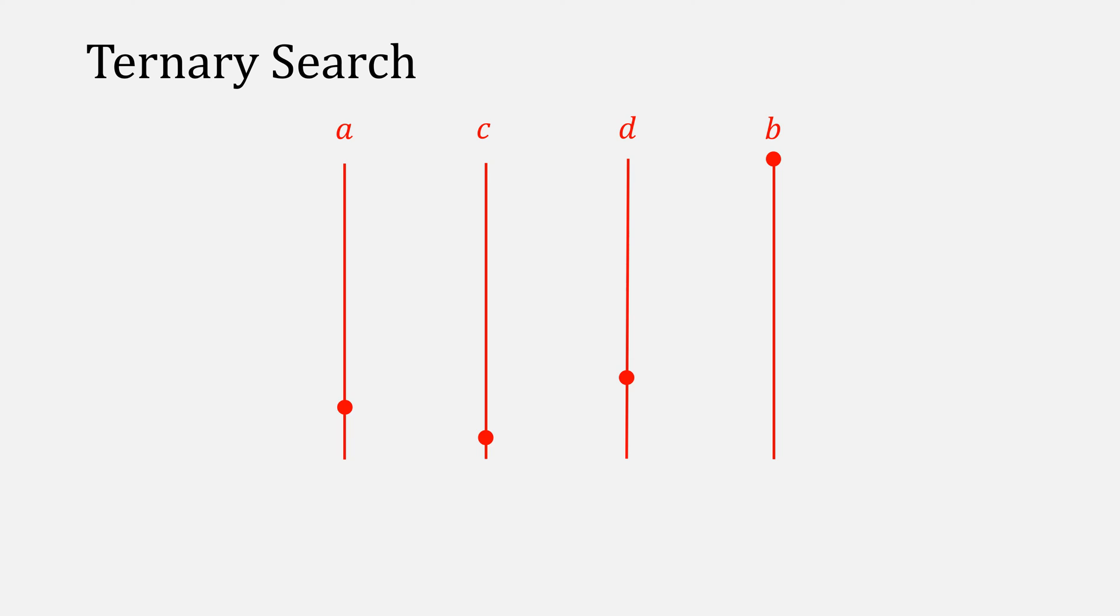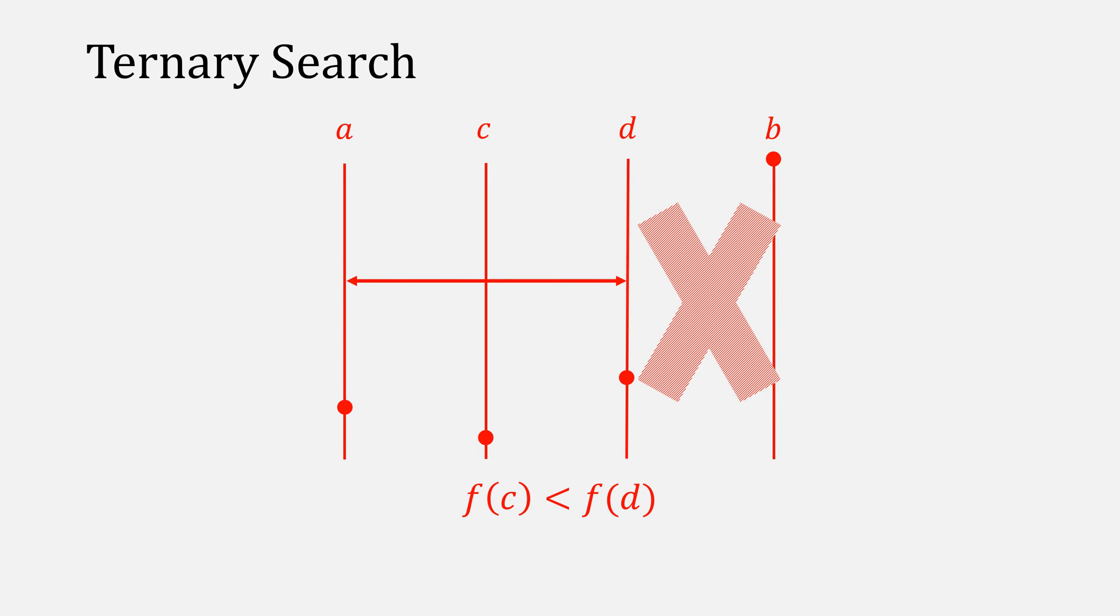Recall with ternary search, we always check the values of the functions between C and D, deciding on which interval to keep. Note that the new interval is going to be two-thirds the size of the old one.